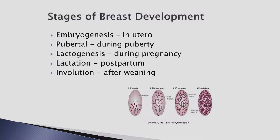Embryogenesis begins during early embryo development. A primitive milk streak develops from the axilla to the groin. By 12 to 16 weeks, smooth muscle cells begin to develop in the nipple and the areola, while epithelial cells start to form a mammary bud. By 32 weeks, the mammary bud has branched into a ductal system from the circulating placental sex hormones from the mother. Between 32 and 40 weeks, lobular-alveolar structures contain colostrum.